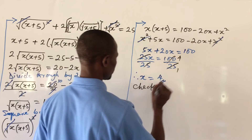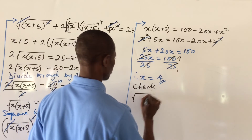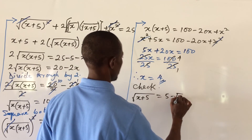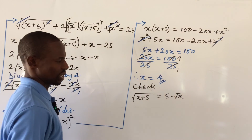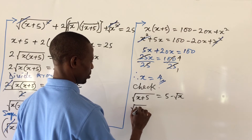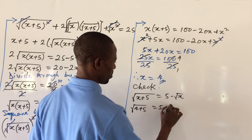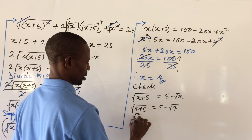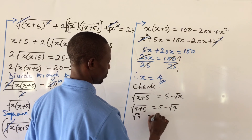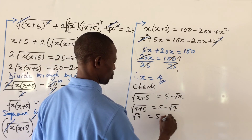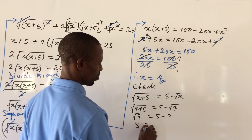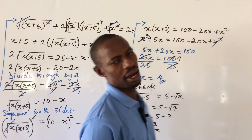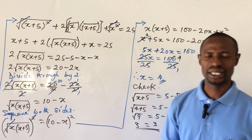Let's check: our equation is root of (x plus 5) equal to 5 minus root x, and we said x is 4. So we have root of (4 plus 5) equal to 5 minus root 4. That gives us root 9 equal to 5 minus 2, which is 3 equal to 3. That confirms the radical equation is correct.